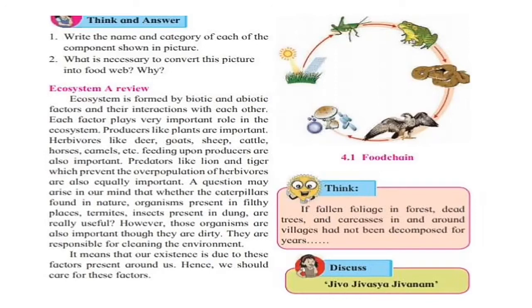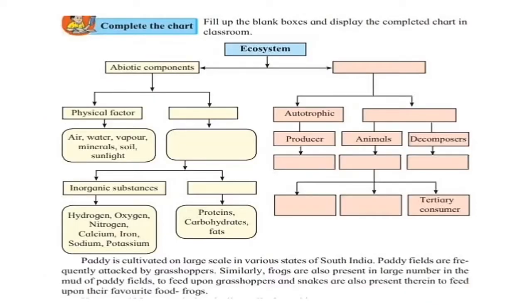We see a food chain in the diagram. Each organism depends on other organisms for their energy production. In that chart of the ecosystem, abiotic components are present, and in the biotic components there are autotrophs, heterotrophs, producers, animals, decomposers, and other factors.